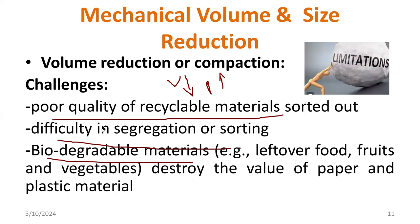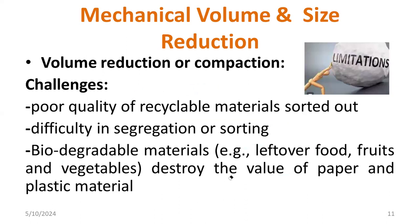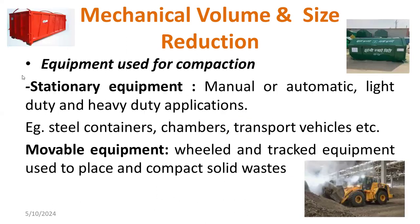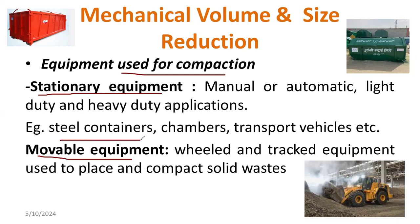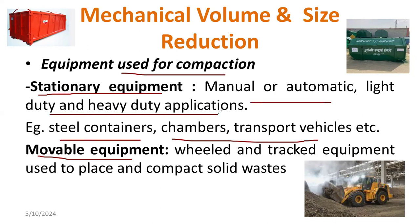You might have studied Boyle's law: P1V1 equals P2V2. Now, regarding equipment used for compaction, we have two types: stationary equipment and movable equipment. Examples of stationary equipment are steel containers, chamber transport vehicles, etc. These are purely manual and available in light-duty and heavy-duty applications.